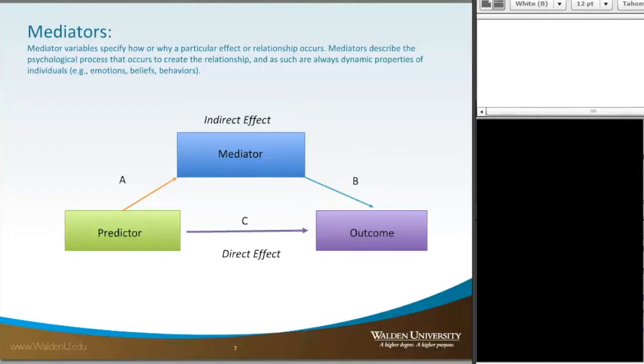But when we add the mediator into the model, we'll actually see that direct effect C be reduced in terms of the coefficient. When we have a perfect mediator, the relationship between the predictor and the outcome, when we put this perfect mediator into the model, actually becomes non-significant. And so that's what we know as a perfect mediator.